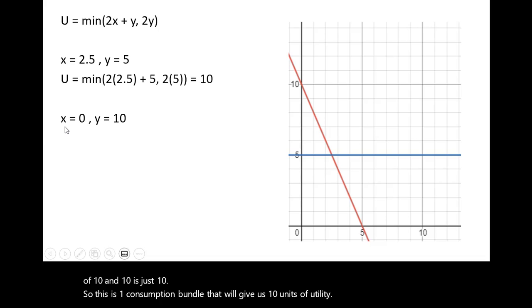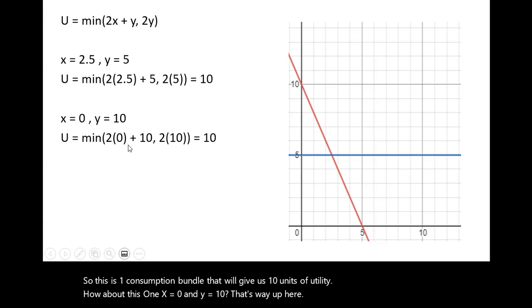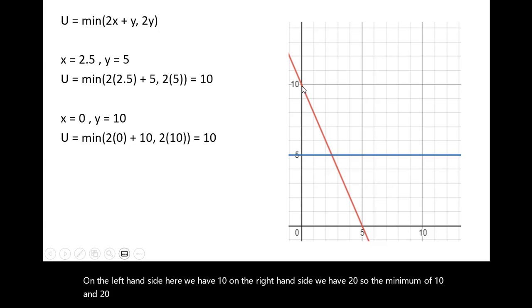How about this one, x equals 0 and y equals 10? That's way up here. So plugging in 0 for x and 10 for y. On the left-hand side here, we have 10. On the right-hand side, we have 20. So the minimum of 10 and 20 is 10. So here, again, is another point where we're getting 10 units of utility.